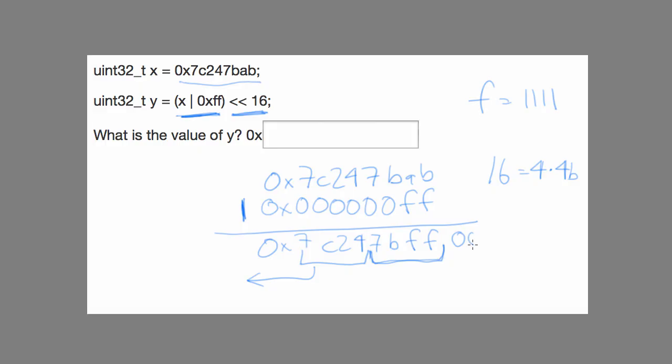We're going to shift in 16 bits of zeros, or four hexadecimal zero characters. And so our result is going to be this part of the number, or 7bff0000.